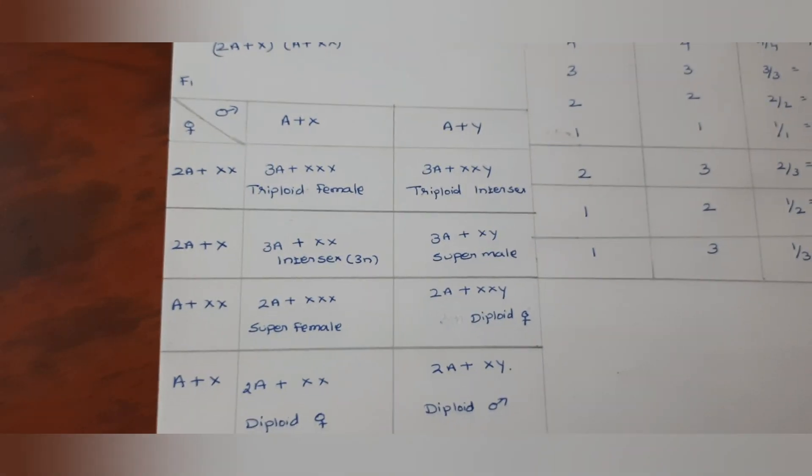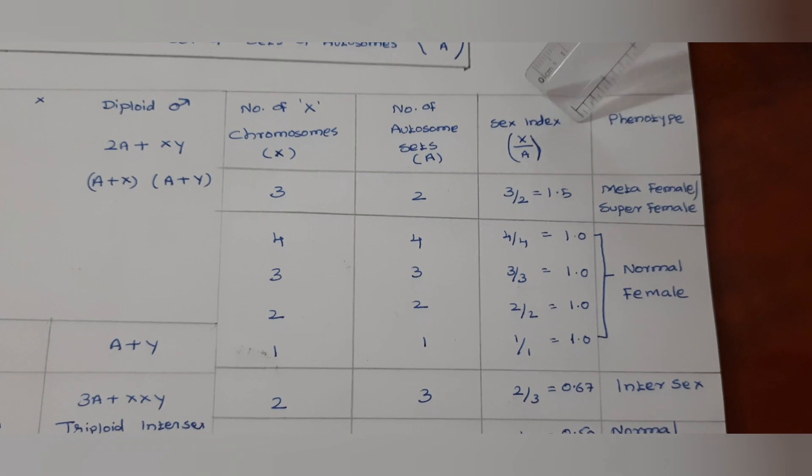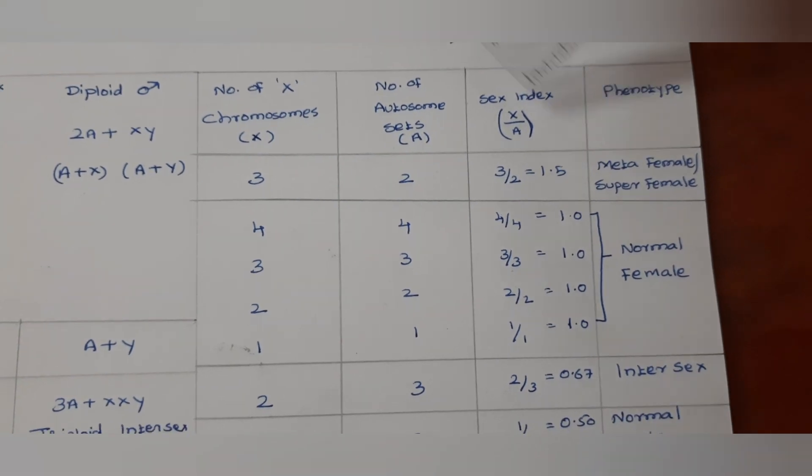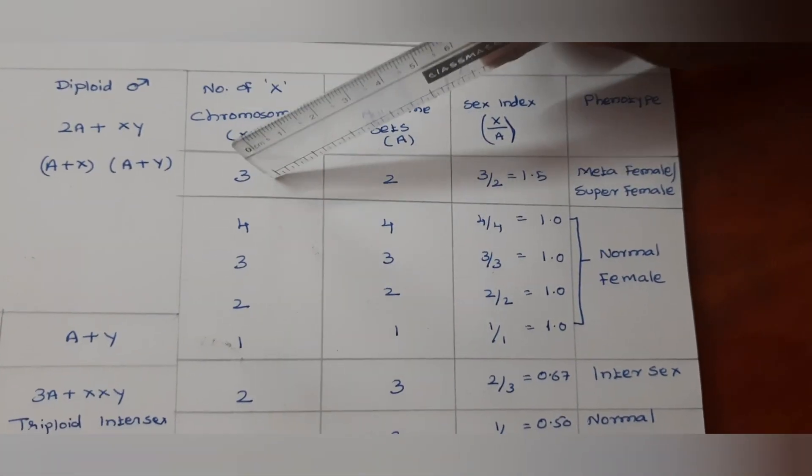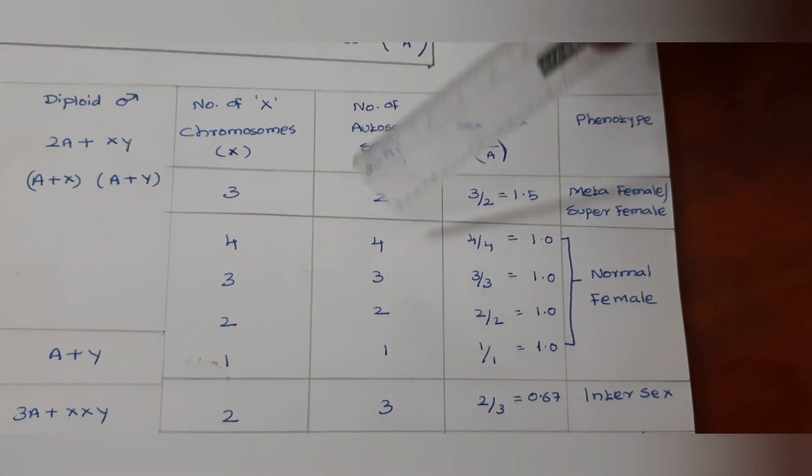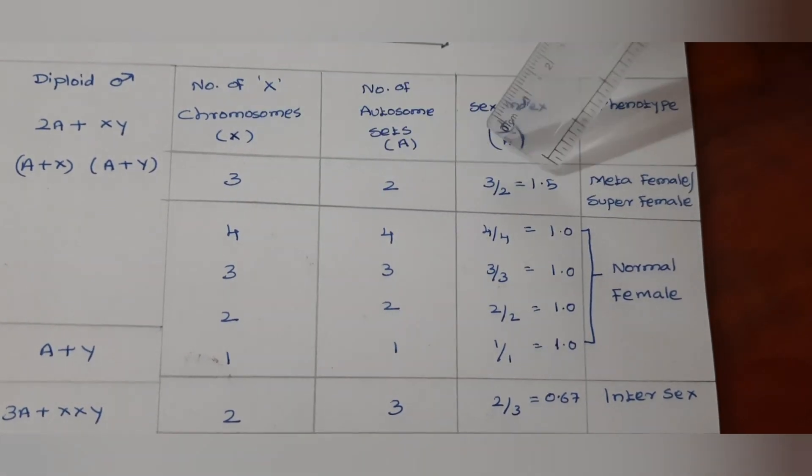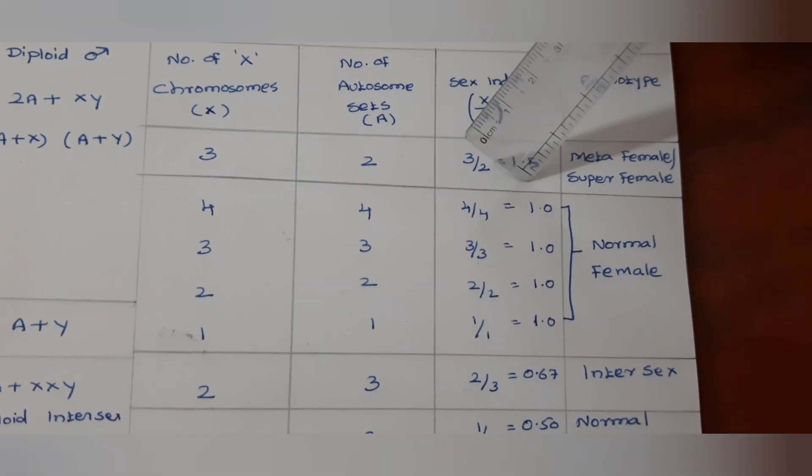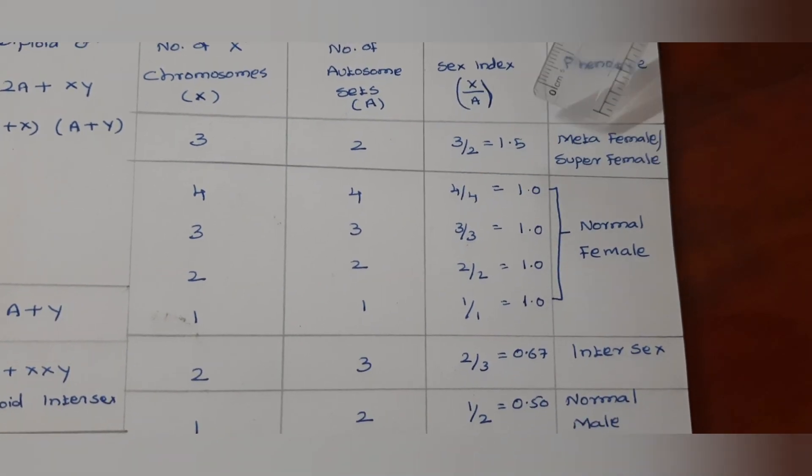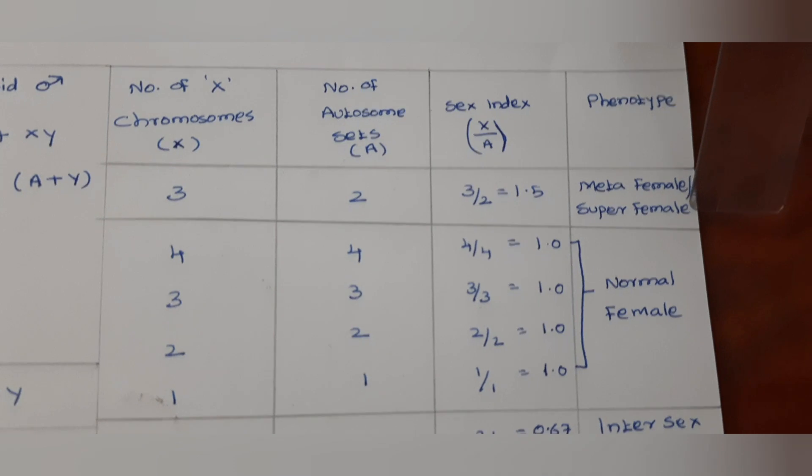Now you see there are some values, the sex index values. In an organism, number of X chromosomes is 3, number of autosome sets is 2. Then sex index is X by A: 3 by 2 is equal to 1.5. Such individual is metafemale or super female.